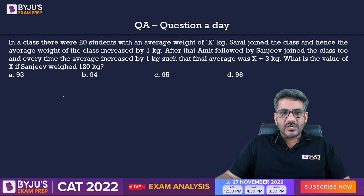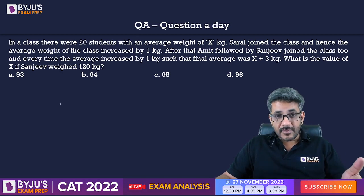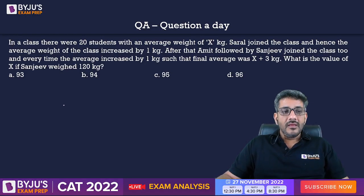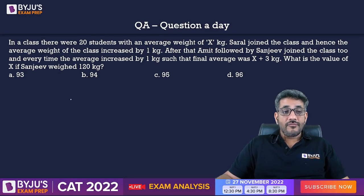It says in a class, there were 20 students with an average weight of x kg. Saral joined the class. Hence, the average weight of the class increased by one. After that, Amit followed by Sanjeev joined the class too. And every time the average increased by one kg such that finally, it is x plus 3. What is the value of x if Sanjeev weighed 120 kg?